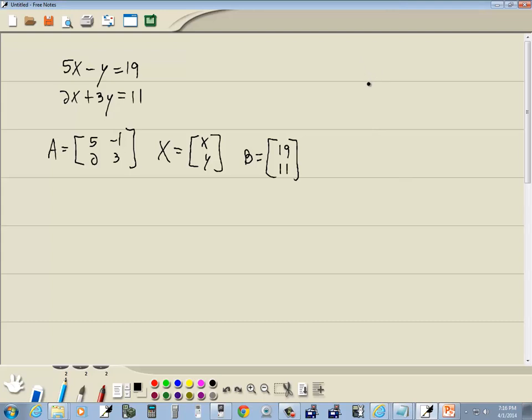Now, the way our equation goes is we've got AX equals B. We want to get X by itself. Actually, that should be an uppercase X. There we go. So what we do is we multiply both sides by the inverse of A.